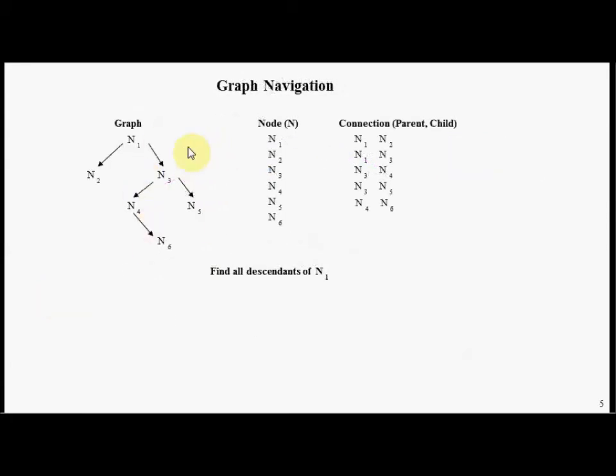Given the graph, one of the things you can do with relational database technology is represent the components of a graph using relational database tables. In our graph we can represent the nodes with a node table. We can represent the connections using a connection table consisting of parent-child pairs. One of the classical things you want to do with a graph is the ability to navigate the graph.